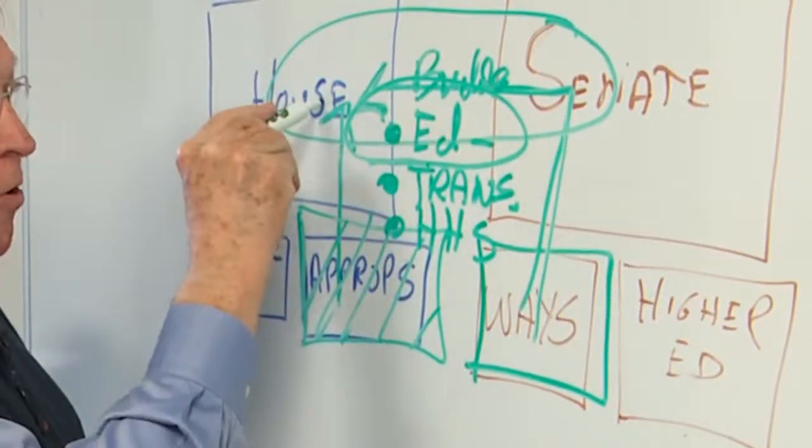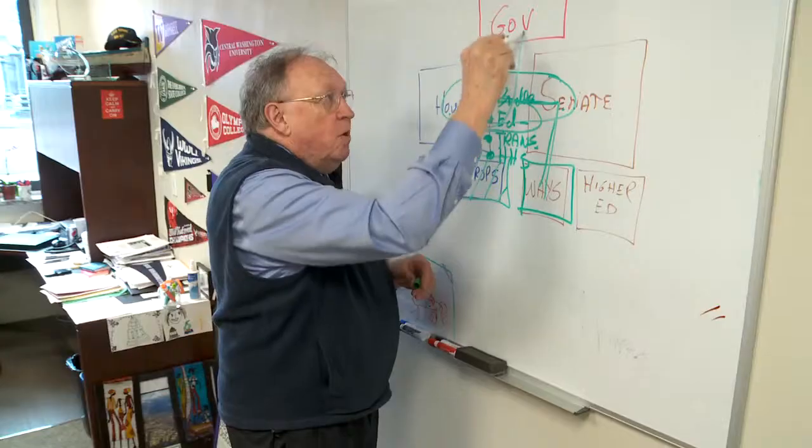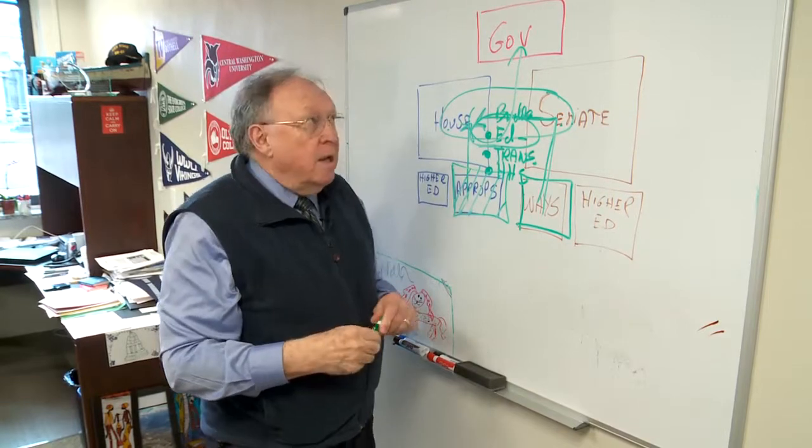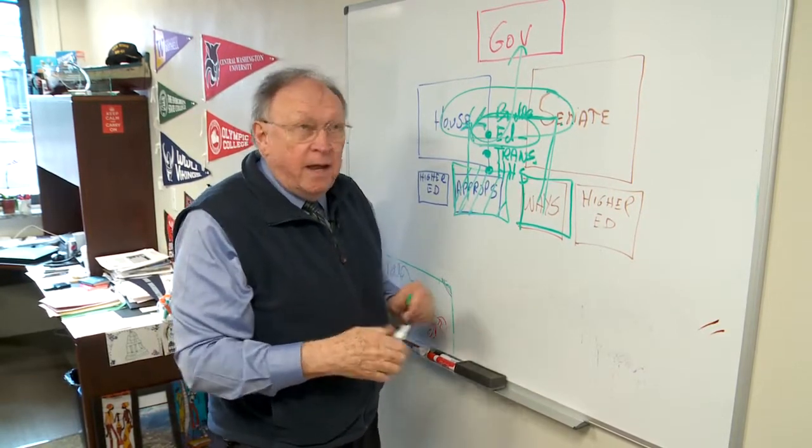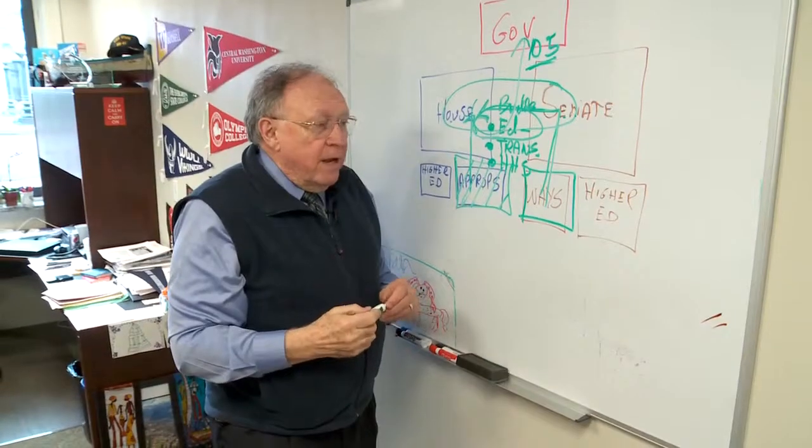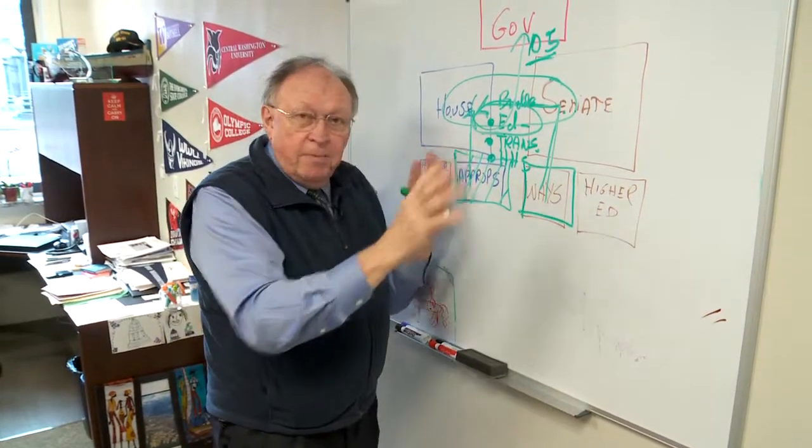When we get through this back and forth between the Senate version and the House version, we'll end up voting a bill that goes to the governor for signature and we're supposed to do that on time in 105 days. So that's where we are right now, just shifting from policy bills to building a budget.